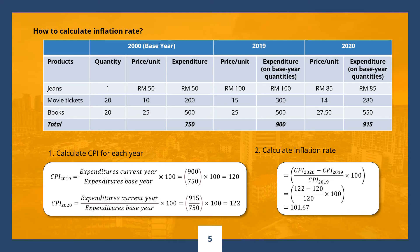Why don't you try and calculate the total expenditures for the year 2020? The total expenditure for 2020 is RM915. To calculate the CPI for 2019, we divide the total expenditure for 2019, which is RM900, over the total expenditure for the base year 2000, which is RM750, and multiply by 100. So the CPI for 2019 is 120. Why don't you pause this video and try to calculate the CPI for 2020? The CPI for 2020 is 122.